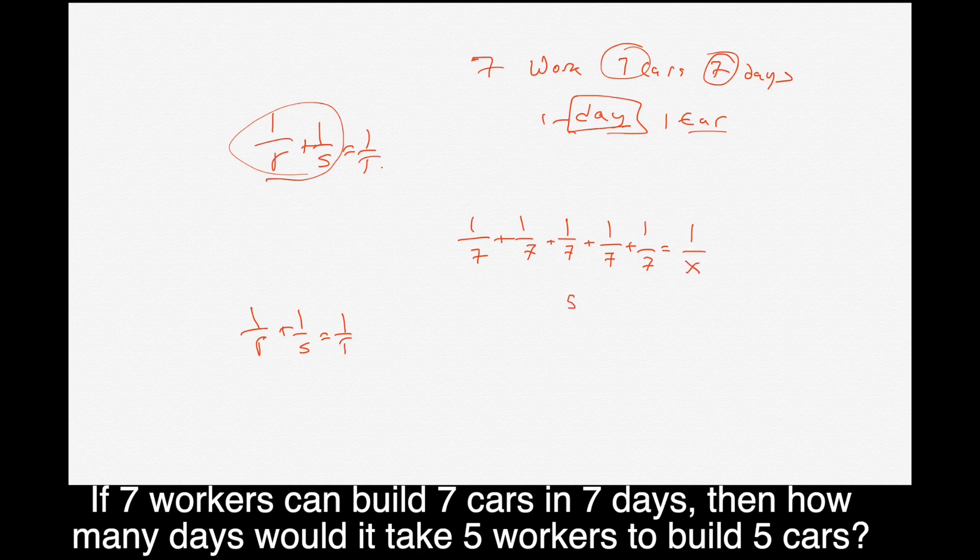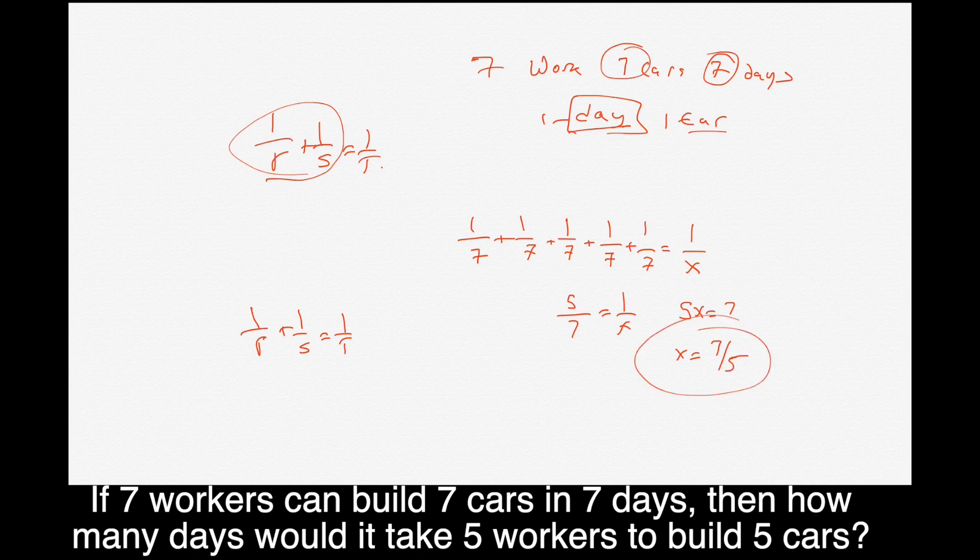And let's figure out how long it takes them to do one car. Okay, so we have five one over seven, so that's five sevens, equals one over X. And we cross multiply, we get five X equals seven, and we get X equals seven fifths. So it takes them seven fifths days to do one car, right?